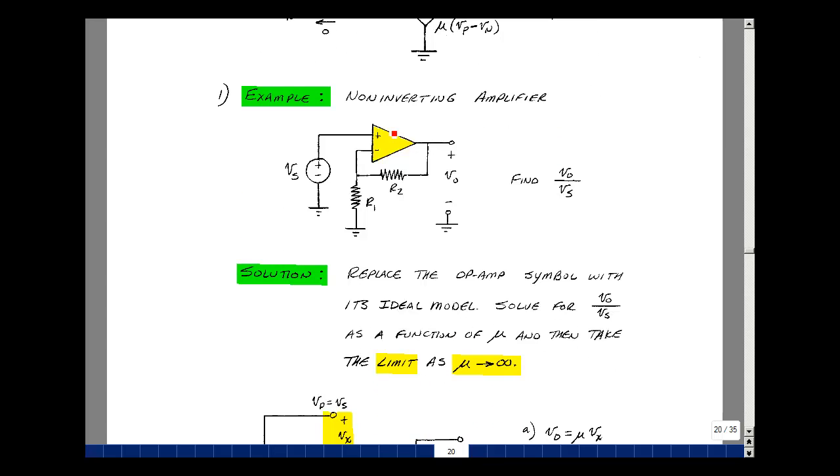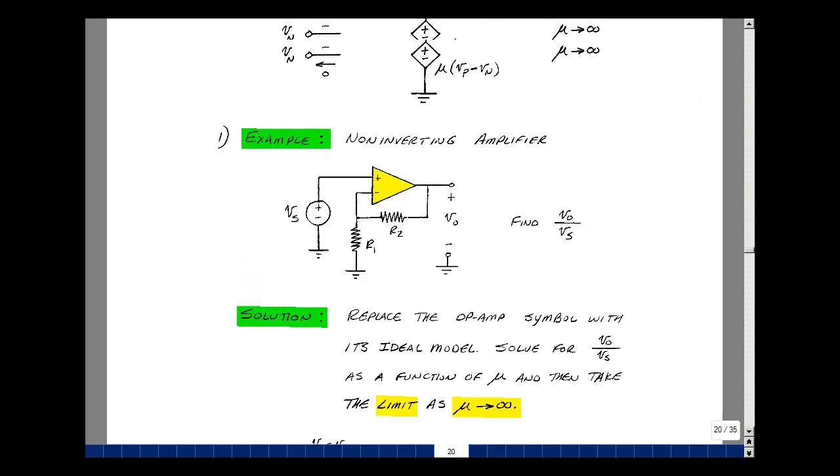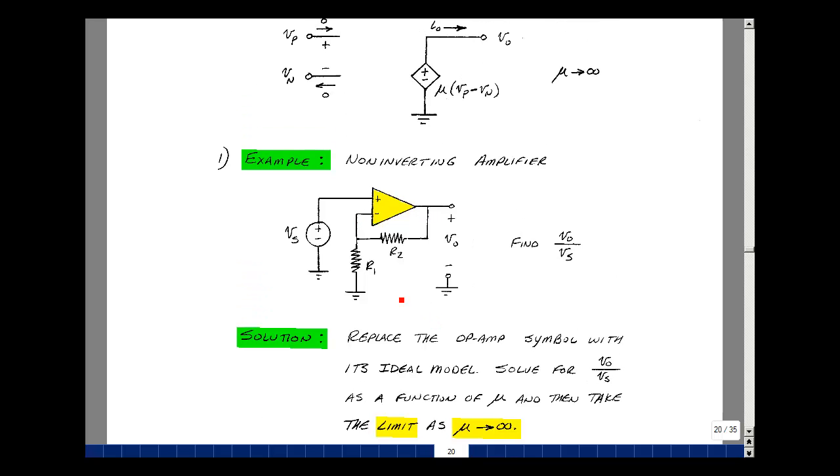So here I've got an op-amp. I'm not going to show the power supply connections, we're going to assume that you're going to make those. What this is saying is that there is a controlled source from back through here, back to ground. Let's see if we can solve for Vout divided by Vs. We'll assume that R1 and R2 are known resistances, and that Vs would also be known.